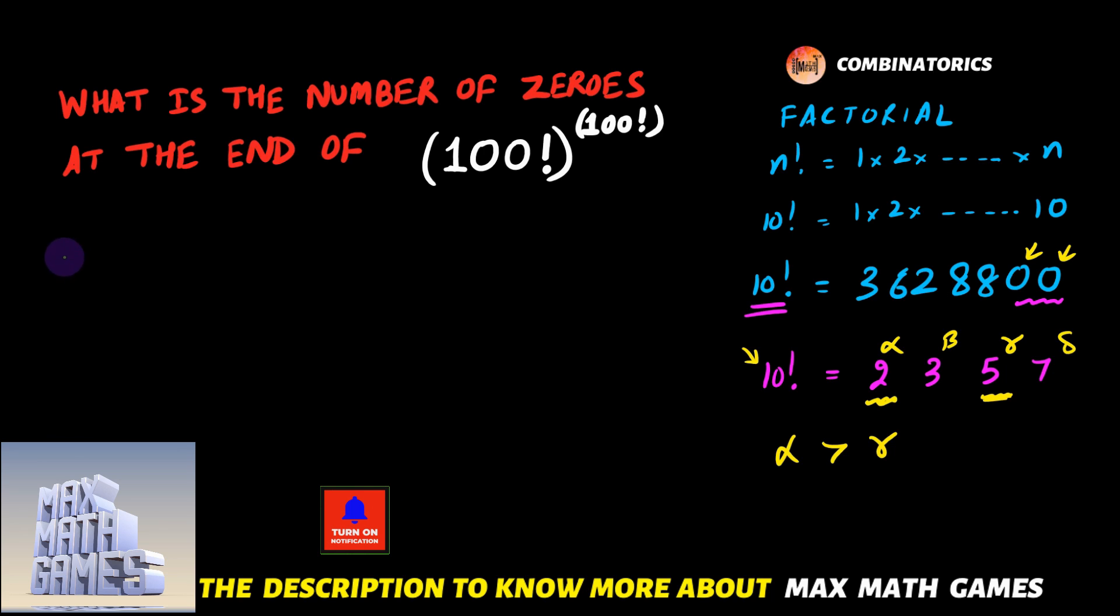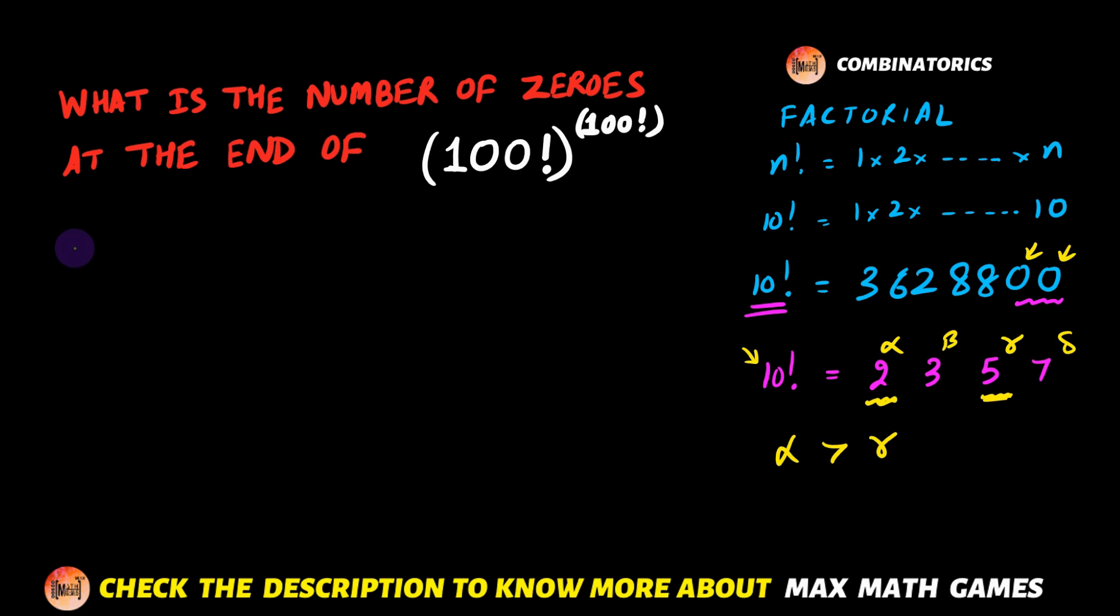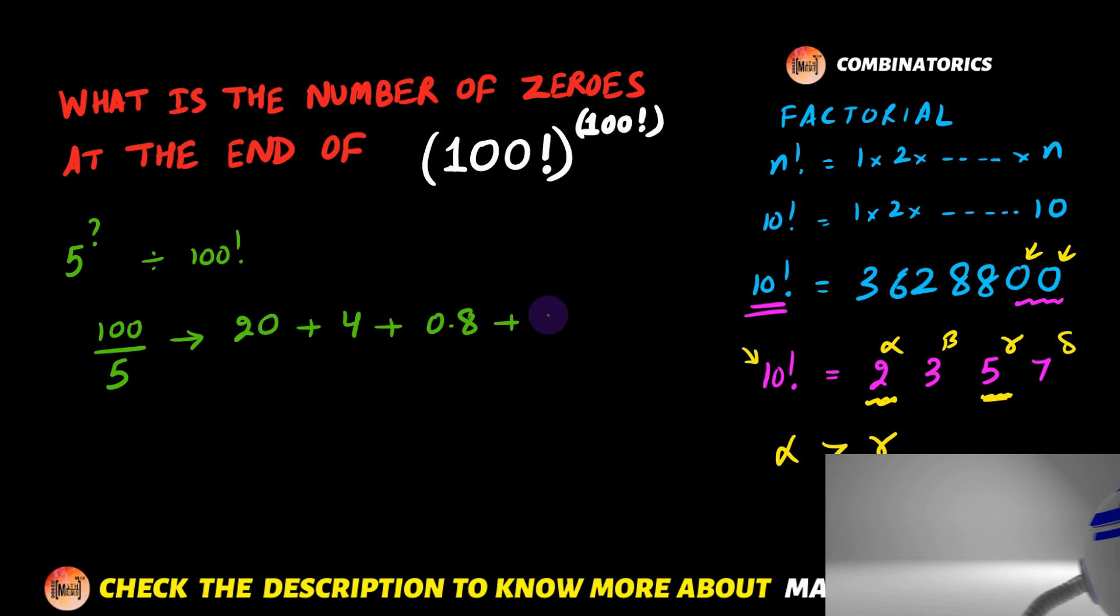And the method of doing so: if I need to calculate the highest power of 5 which will divide 100 factorial, then the way of doing this is we write 100 ÷ 5. This equals 20. We again divide this by 5, we get 4. We again divide by 5, we get 0.8. We again divide by 5, we get 0.16, and so on. These quantities do not contain any integer part, and we take only the integral part.